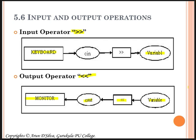Cascading of input and output operators: C++ supports the use of stream extraction and stream insertion operations many times in a single input or output statement. You can read more than one input from the keyboard into different variables by using cin and more than one input operator. Similarly for output, you can display the values of two or three variables at the same time using more than one output operator. This is known as cascading of input/output operators.